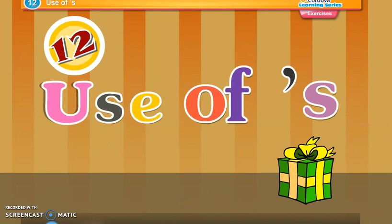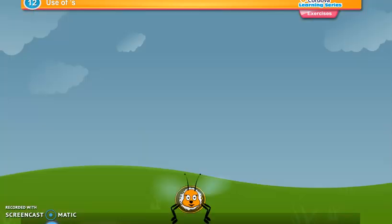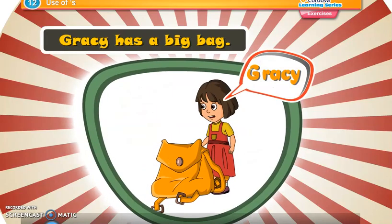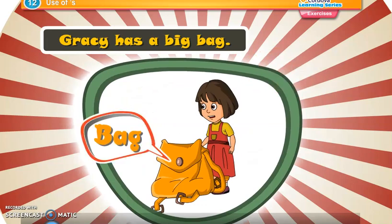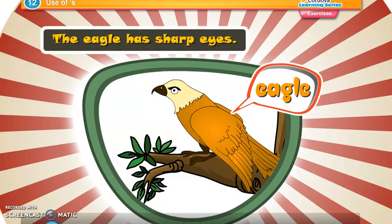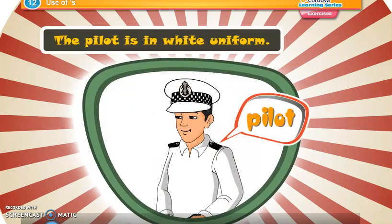Chapter 12: Use of Apostrophe S. Read the sentences given below. Gracie has a big bag — Gracie's bag is big. Bag belonging to Gracie. The eagle has sharp eyes — the eagle's eyes are sharp. Eyes of the eagle. The pilot is in white uniform — the pilot's uniform is white.